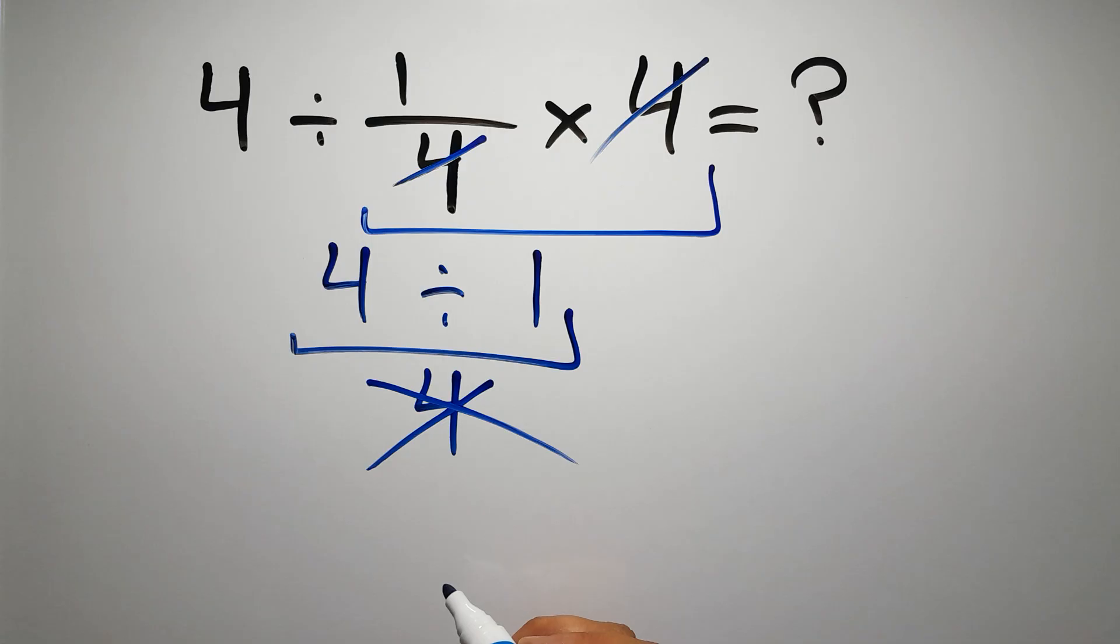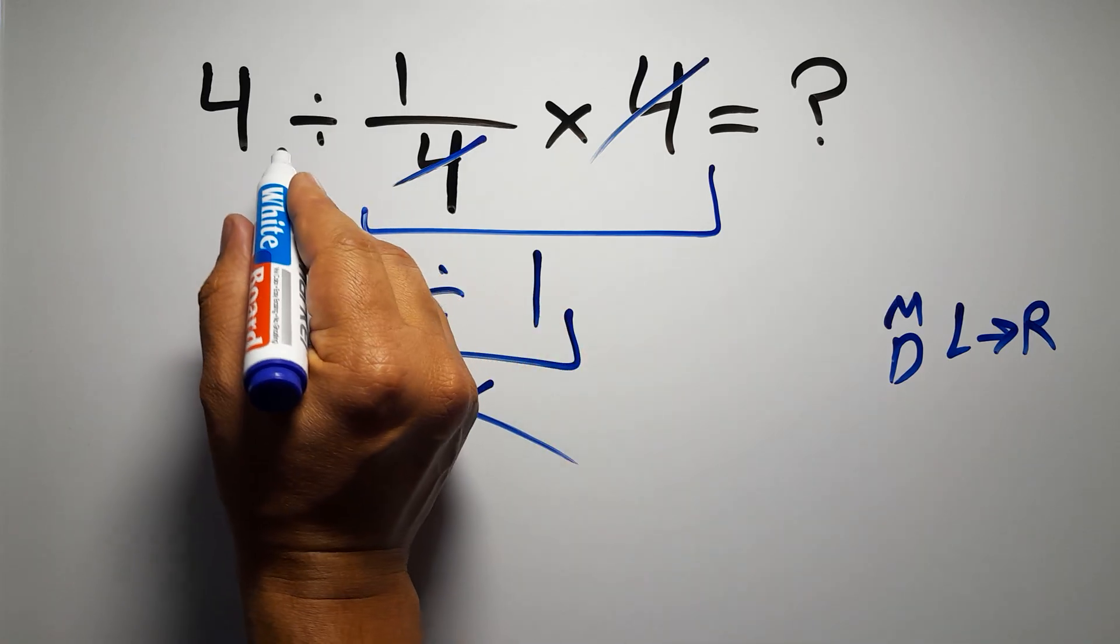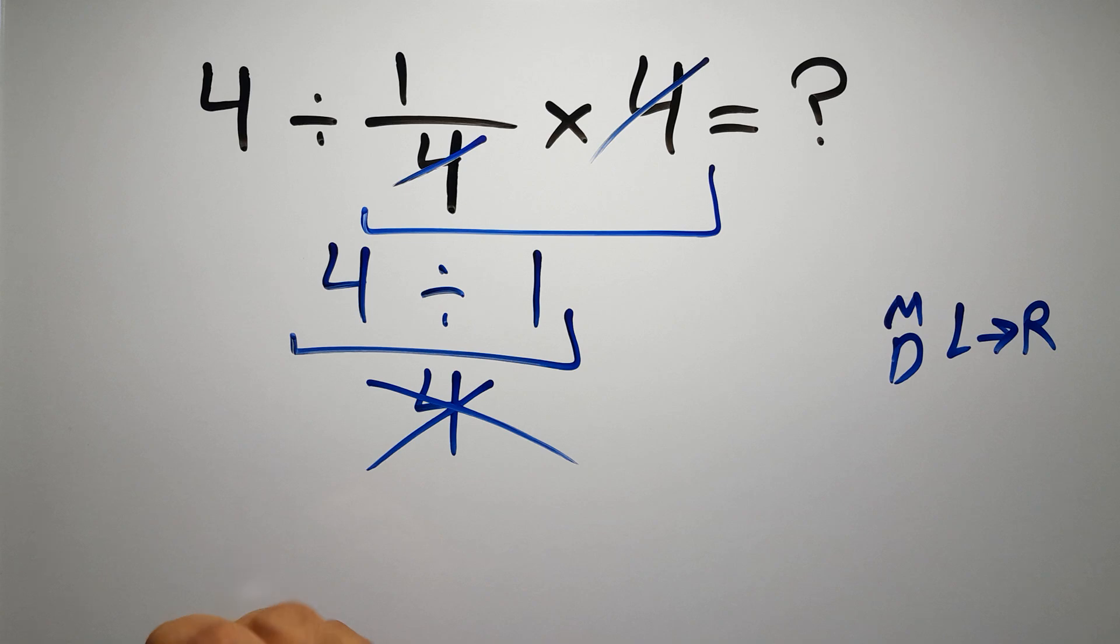Because according to the order of operations, multiplication and division have equal priority and we have to work from left to right. So here first we have to do this division, then this multiplication. If we do this multiplication before this division, it is wrong.